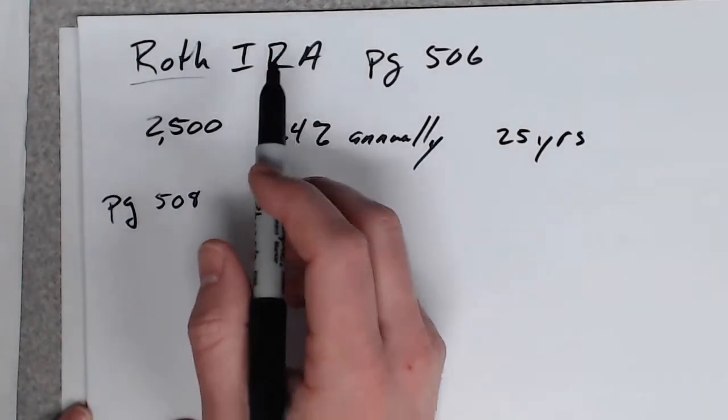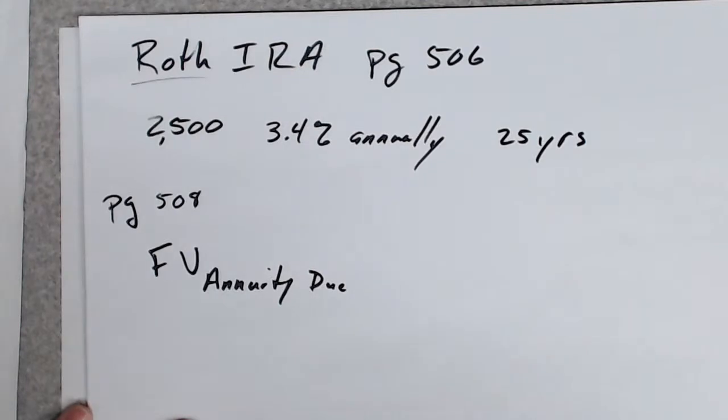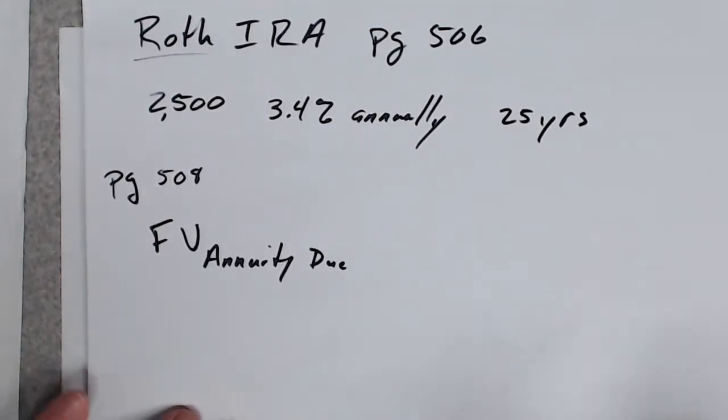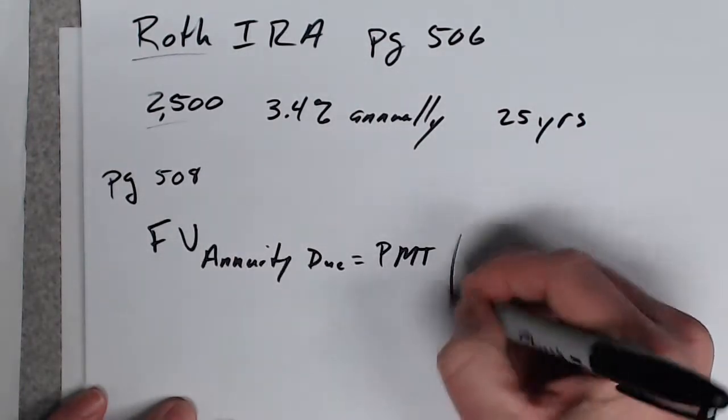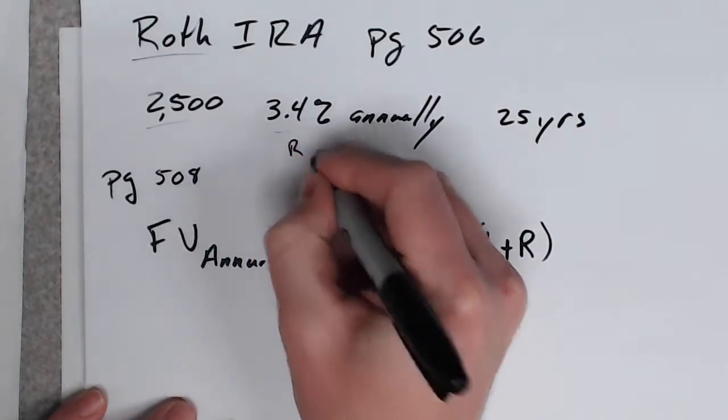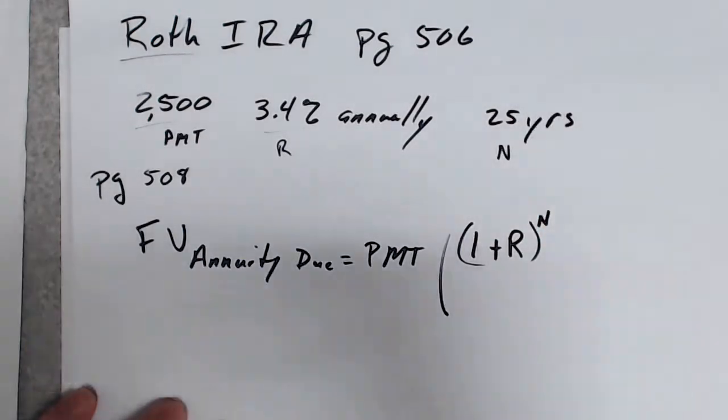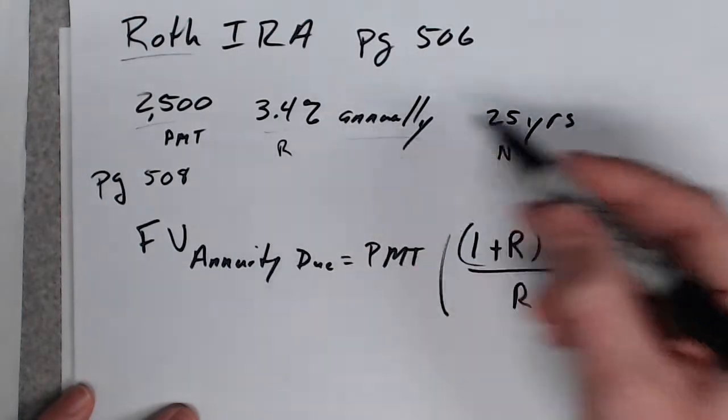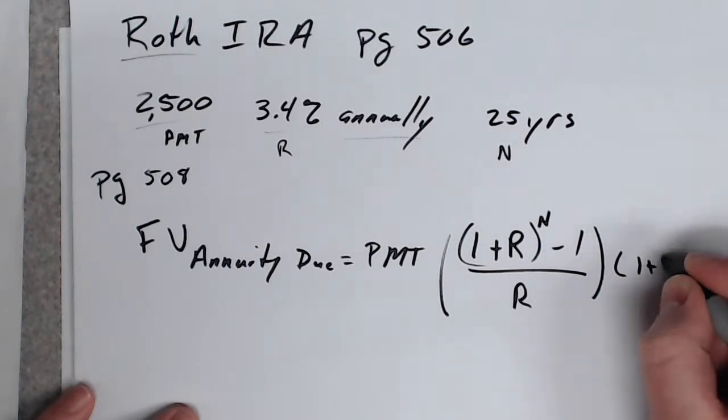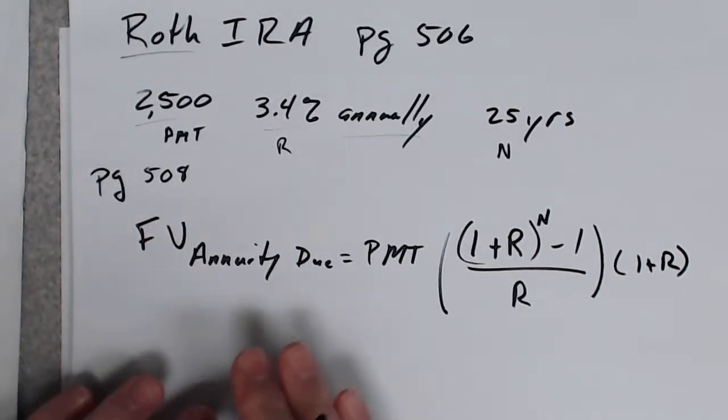A Roth IRA is an annuity due. So, the future value of an annuity due. It's an annuity due because it starts getting interest whenever you first pay, and you pay at the very beginning. It's the payment that you're going to pay, like the $2,500. Parentheses 1 plus R. R stands for rate. That's the payment. To the N power. N stands for periods. So, in this case, it's 25 since it compounds annually. There's only 25 periods. And minus 1 over R, which is still rate. And for the annuity due, you get this little extra piece here. 1 plus R for that extra period instead of the ordinary annuity. So, page 508, you get both of them. Here's the one for annuity due. That's what you use for the Roth IRA.